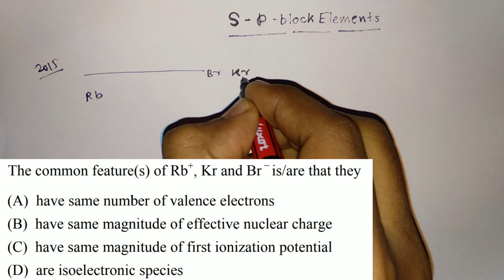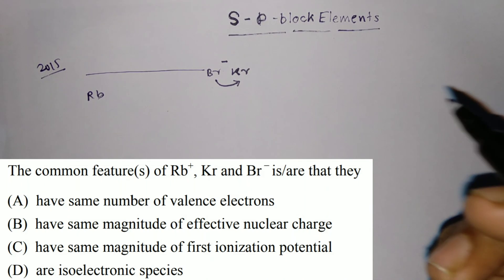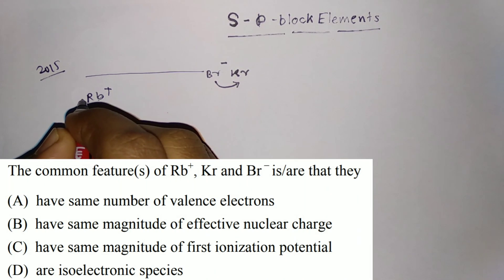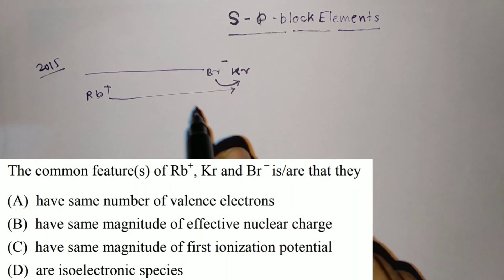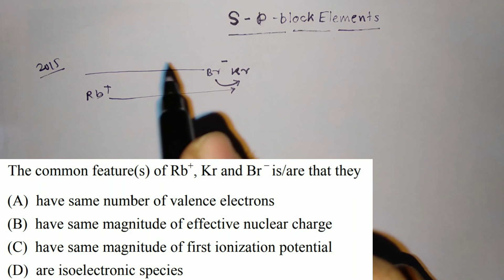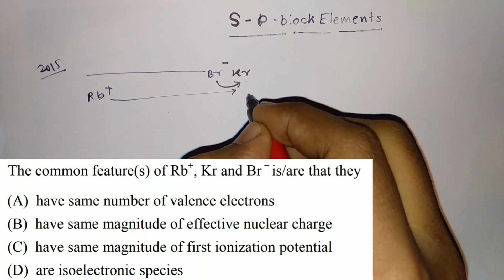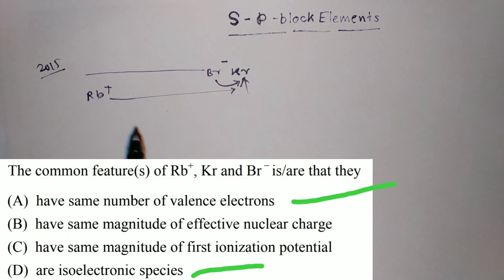For Krypton, Br- means similar electronic configuration to Krypton, and Rb+ also has a similar electronic configuration to Krypton. So these two have the same electronic configurations — they are isoelectronic species. That is why they have the same number of valence electrons because the electronic configurations are the same as Krypton. So options A and D are correct.